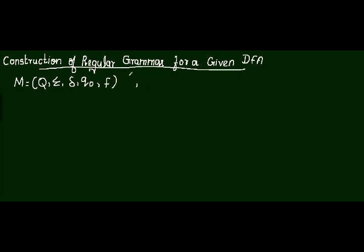Whereas, grammar consists of four parts. Let the grammar be G. It consists of: V_N, that is the set of non-terminals; Sigma, the set of terminals; P, the set of production rules; and a start symbol.